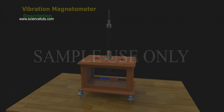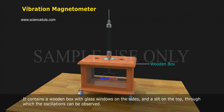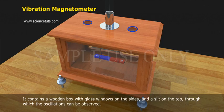Vibration Magnetometer Description. It contains a wooden box with glass windows on the sides and a slit on the top through which the oscillations can be observed.